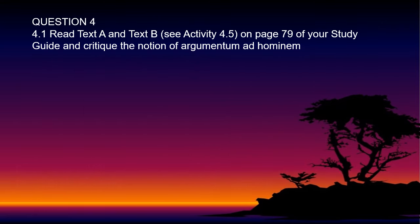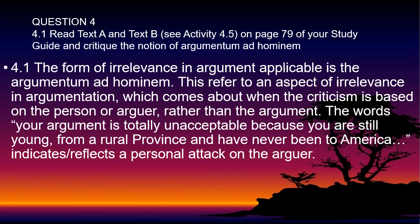Question four: read text A and text B, see activity 4.5 on page 99 of your study guide, and critique the notion of argumentum ad hominem. 4.1: the form of irrelevance in argumentation applicable here is argumentum ad hominem. This refers to an aspect of irrelevance in argumentation which comes about when criticism is based on the person or arguer rather than the argument. The words 'Your argument is totally unacceptable because you are still young, from a rural province, and have never been to America' indicate a personal attack on the arguer rather than the argument.